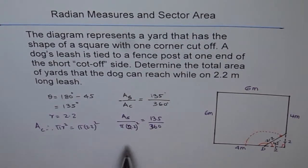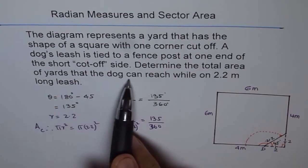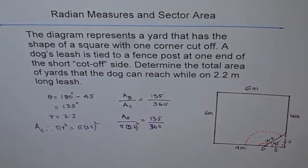So we can find the area of the sector, the total area which we are interested in, of the yard that the dog can reach while on a 2.2 meter long leash.